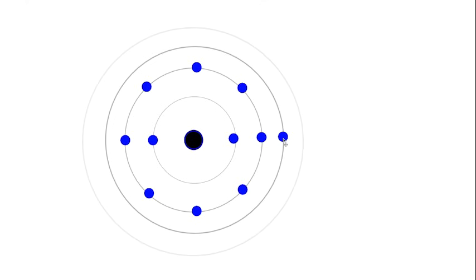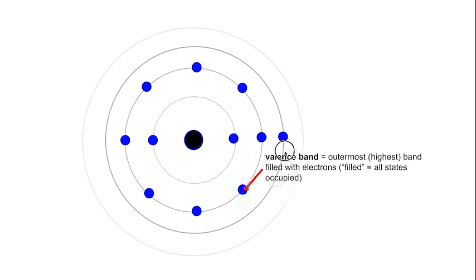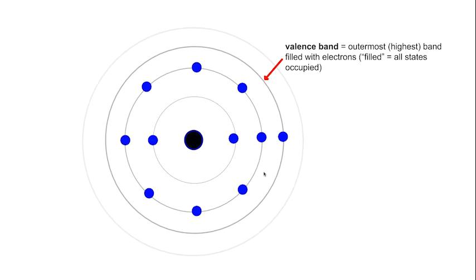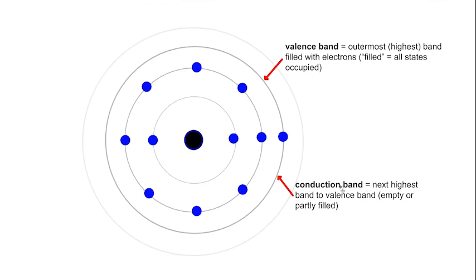This outermost electron is very loosely held, and it actually contributes to the reactivity of sodium. It is also referred to as being in the valency shell — the shell that contains electrons in the outermost position. Because this shell is at the outermost and the electrons aren't tightly held, this electron is free to move under a potential difference. So this particular shell is also referred to as a conduction band. In other words, this electron doesn't require any energy to become conductive — it is already in an energy state that allows it to conduct.